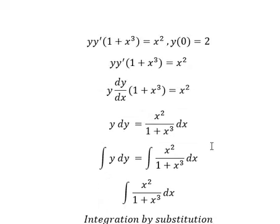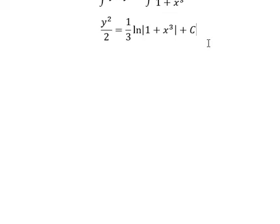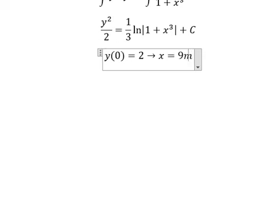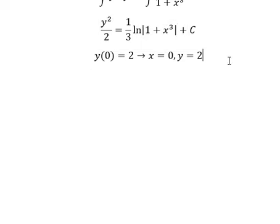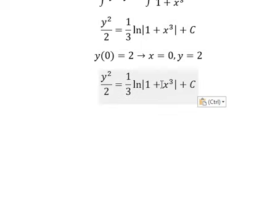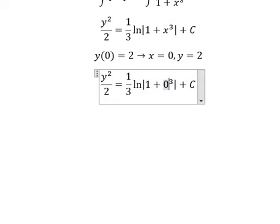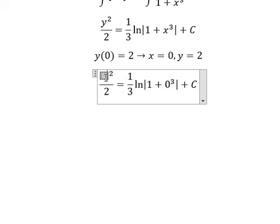Now we have the conditions. When x equals to number zero, y equals to number two. So we put number zero in here, number two in here. Two squared over two equals one third ln of one plus zero cubed plus C. So 2 equals 0 plus C, therefore C equals 2.